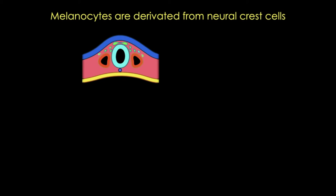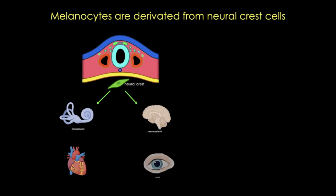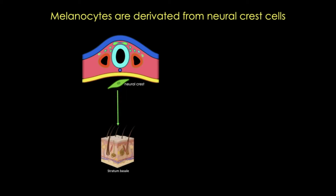This cartoon shows a cross-section of the neural tube at about four to five weeks of development. You can see the light blue neural tube, the dark blue ectoderm, the yellow endoderm, and the pink mesoderm in the middle. The green cells represent neural crest cells that give rise to all sorts of cells in the body, including melanocytes. In the skin, melanocytes are located in the epidermis and hair follicles, though today I'm focusing only on the epidermal melanocytes.